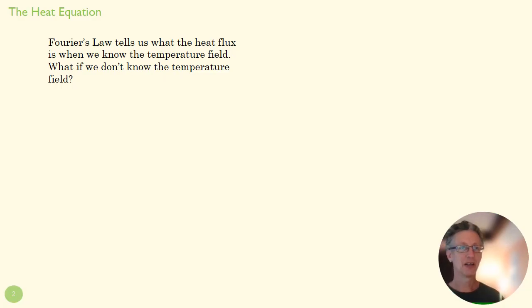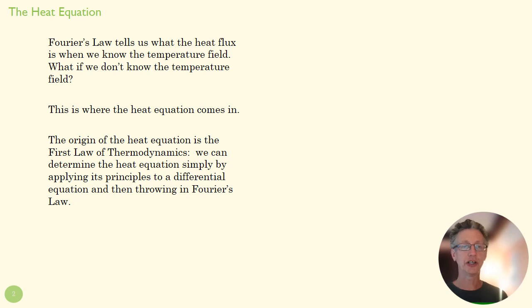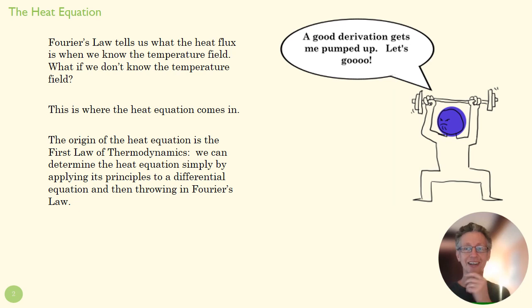So Fourier's law is that rate equation that tells us the flux when we know the temperature field. If we want to know the temperature field, we need more—that's our heat equation. The origin of the heat equation is the first law. We can determine the heat equation basically by taking the first law and applying it to a volume that has been shrunk down to an infinitesimal size, and then we'll throw in Fourier's law to help us out. So let's get deriving.